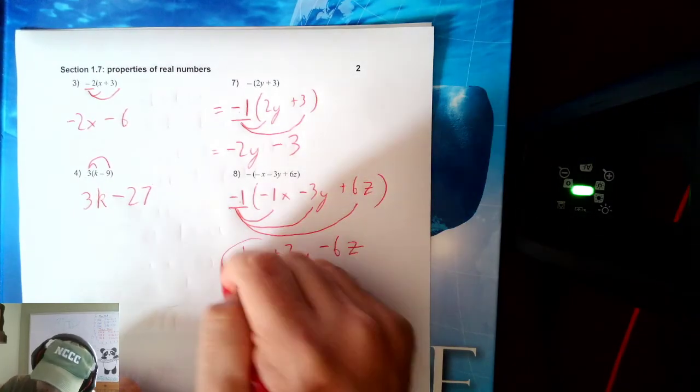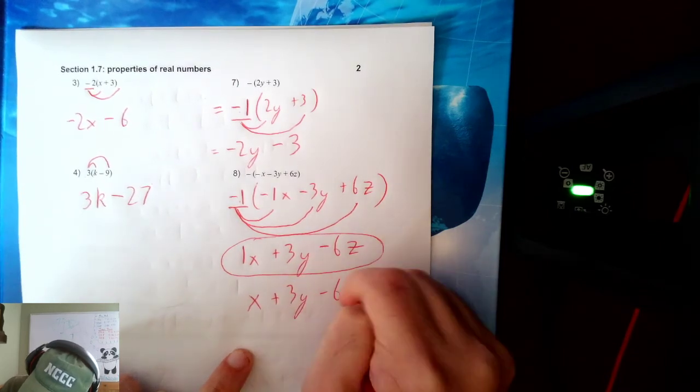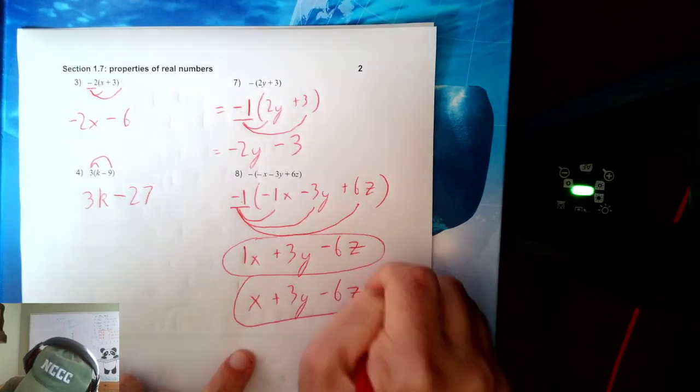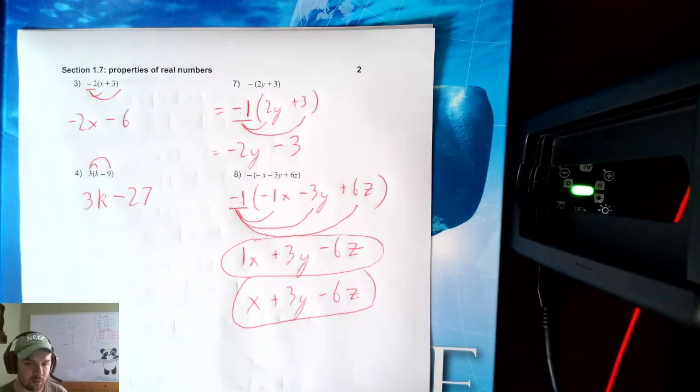Which, this is a fine answer, but you also could have just written X plus 3Y minus 6Z as well. Because remember, you don't need to write the 1 out front if it's the number 1. We don't need to write it.